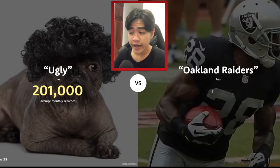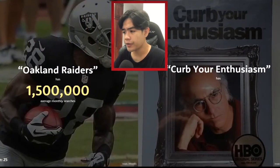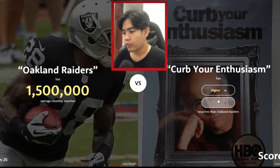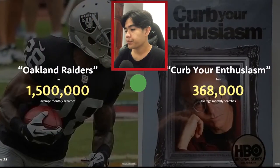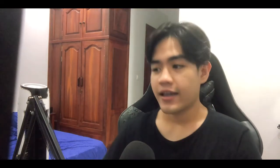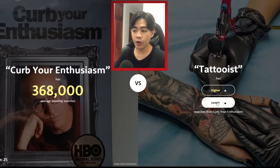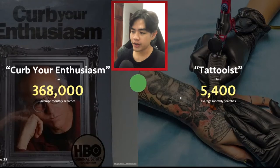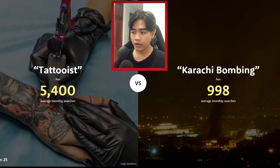Ugly — I'm gonna guess lower. Yeah, 200,000. Oakland Raiders — I'm gonna guess higher. Yes, 1.5 million searches! I'm gonna guess lower — yeah! Tattoo — lower probably. Oh, higher! Wow!